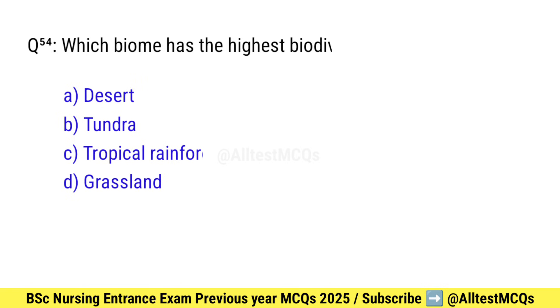Question number 54. Which biome has the highest biodiversity? Right option is C: Tropical rainforest.